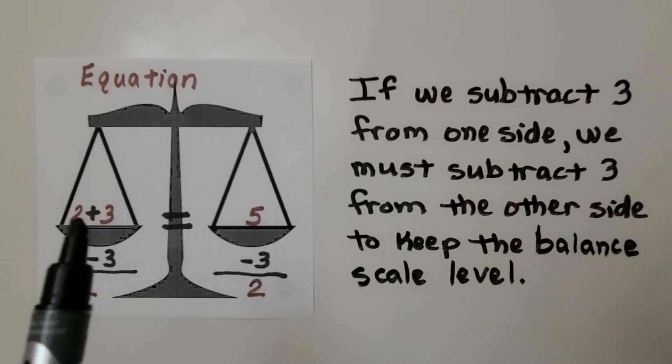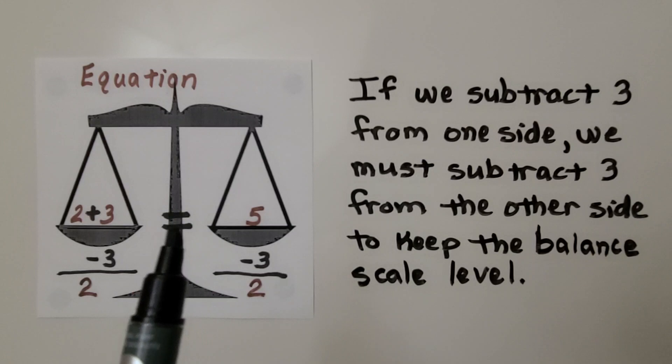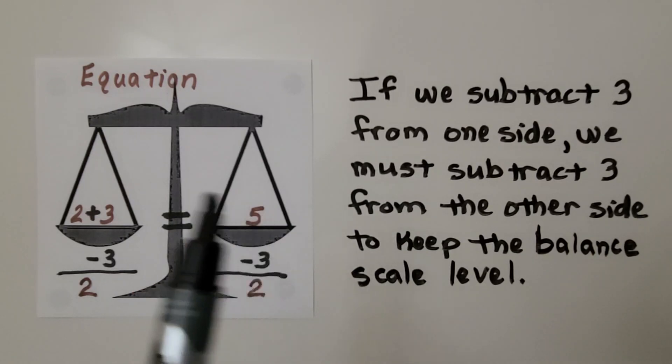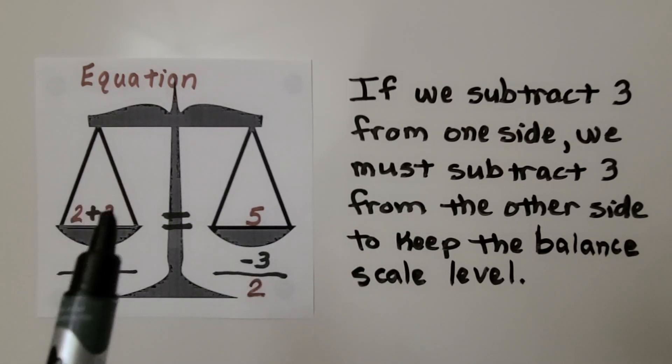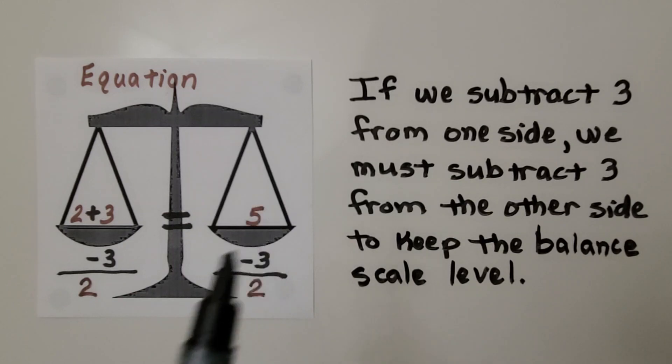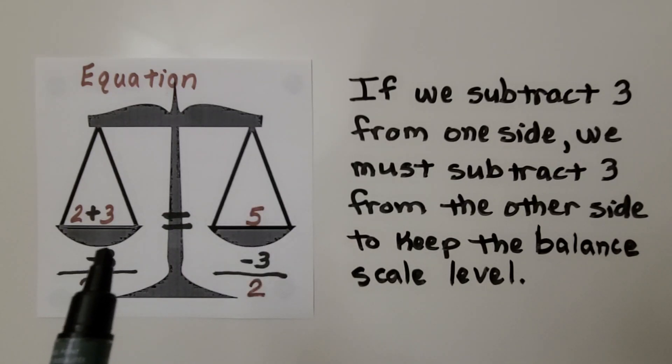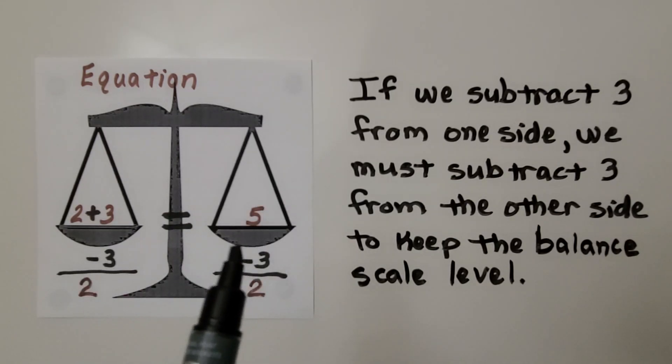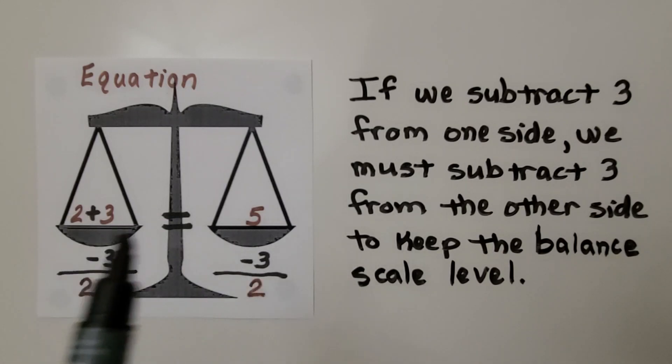So here we have a balanced scale, and we have 2 plus 3 on this side, and it's equal to 5 on this side. This side is 5 in all, and this side is 5 in all. If we take 3 away from this side, we must take 3 away from this side in order to keep it level and balanced. If we subtract 3 from one side, we must subtract 3 from the other side to keep the balanced scale level.